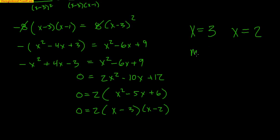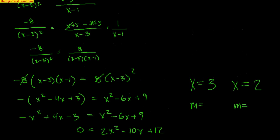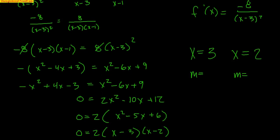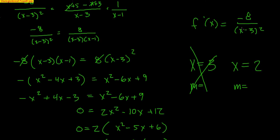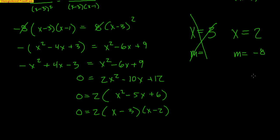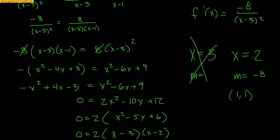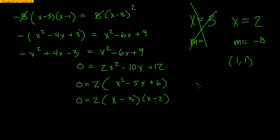Plugging x = 3 into the derivative f'(x) = -8/(x-3)² gives a zero in the denominator, which is undefined — so x = 3 is not differentiable and is not a valid point of tangency. For x = 2: f'(2) = -8/(2-3)² = -8/1 = -8. Using the given point (1, 1), the tangent line equation is y - 1 = -8(x - 1).